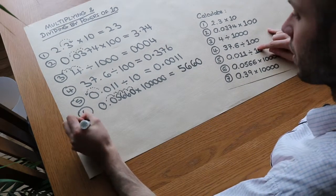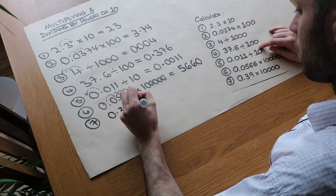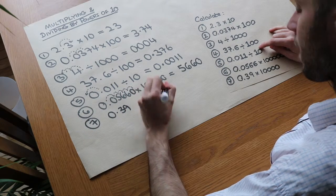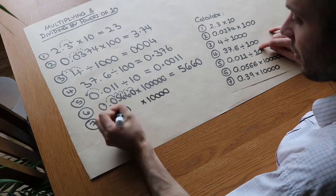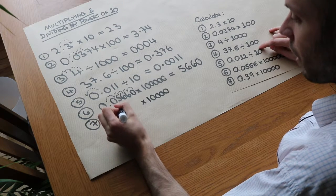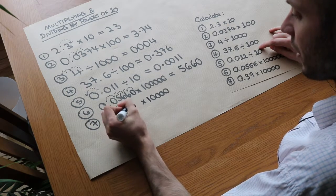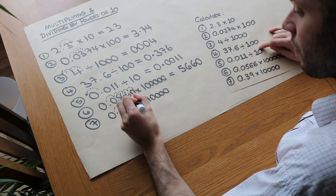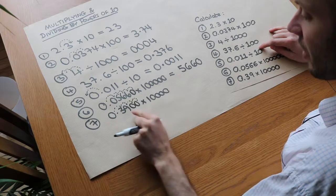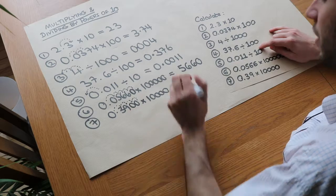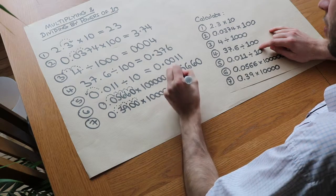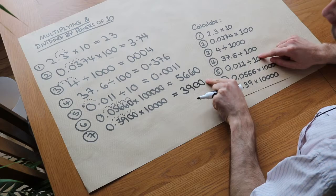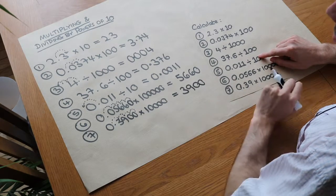The final one: 0.39 multiplied by 10,000. There are four zeros, so it moves once, twice — let's put some extra zeros on the end — three times, four times. So we get 3,900, with the decimal point just after the units digit, but we don't need to write it in.